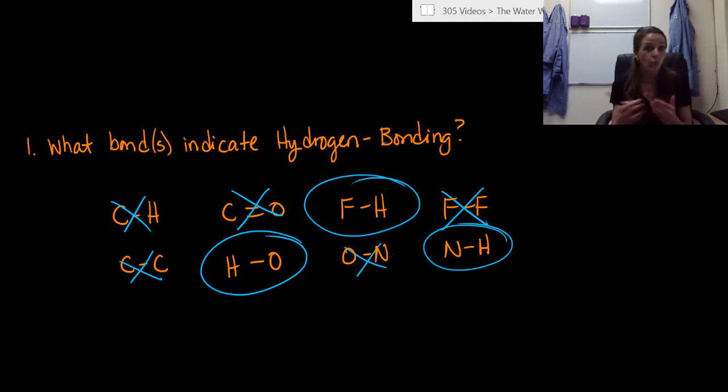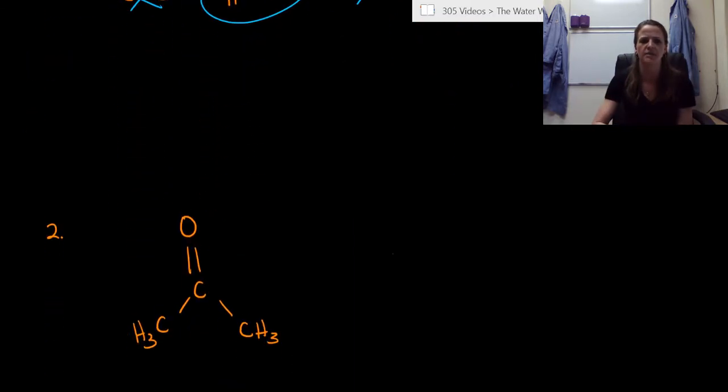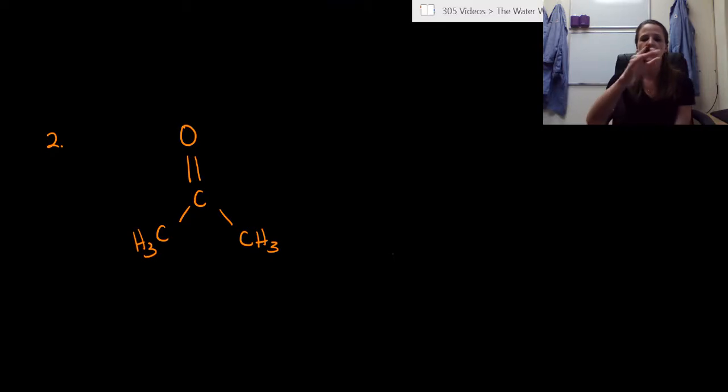If you have these three or any one of these types of covalent bonds within your molecule, then you could possibly have hydrogen bonding between two different types of molecules. So let's take it a step further. We've identified the bonds. Now let's look at an example. Here's our first example. Can this molecule have hydrogen bonding with another molecule?